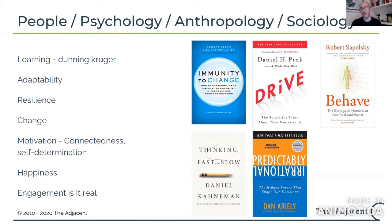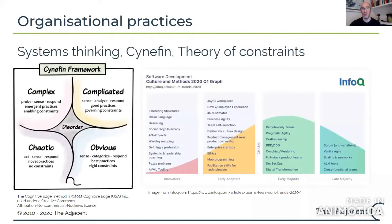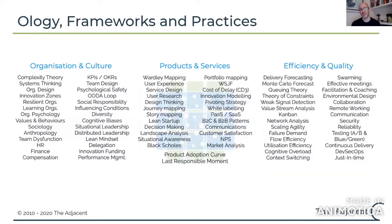Obviously we want to look at how well we're making a great environment for our people, understanding the psychology and sociology of our people — there's an infinite library of material in this area now. One place you can go is InfoQ, which does really good crossing-the-chasm maps of recent practices, models, and frameworks — what's in innovation, what's early adopter, what's late majority — very useful particularly if you're in the software space.